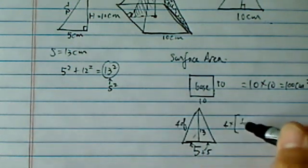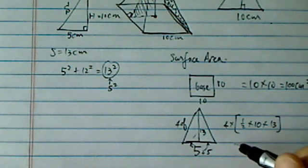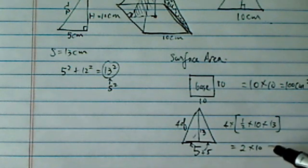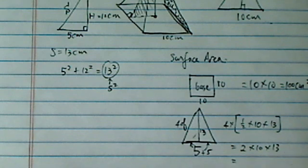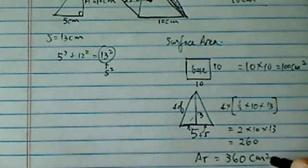So, it's four times half base times height. So, this one is equal to two times ten times thirteen, which is two hundred sixty. So, area total is equal to three hundred sixty centimeter squared.